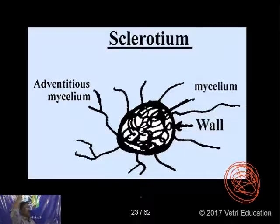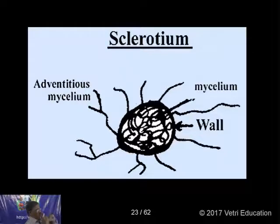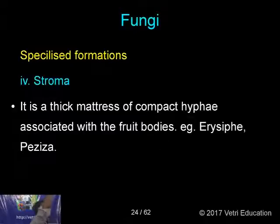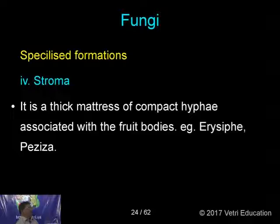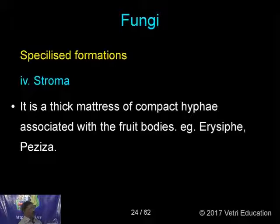Sclerotia have mycelium inside with a thick wall around it, taking a resting stage. After the advent of favorable conditions, it breaks and develops into new mycelium. Stroma is another specialized formation — it is a thick mattress of compact hyphae associated with fruit bodies. Inside the fruit bodies you can find these tissue-like forms formed by fungal hyphae. Examples: Erysiphe and Peziza — both are Ascomycetes members that produce fruit bodies containing stroma.